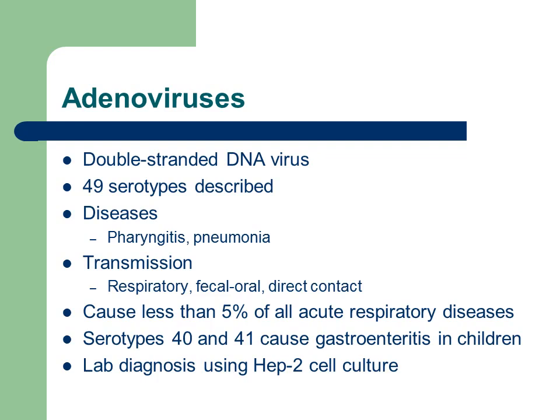The first group we're going to talk about are the adenoviruses. Adenoviruses are in the Adenoviridae family — again a double-stranded DNA virus. There are at least 49 serotypes that have been described. Adenoviruses cause a variety of diseases: they can cause pharyngitis, pneumonia, and upper respiratory tract diseases. They are transmitted through respiratory aerosols, fecal-orally, and through direct contact.